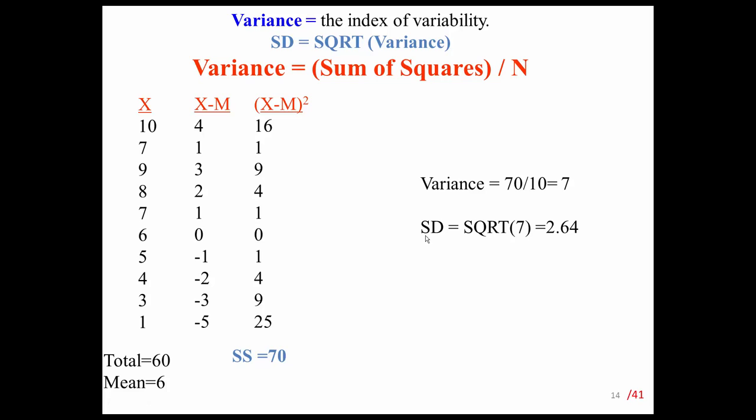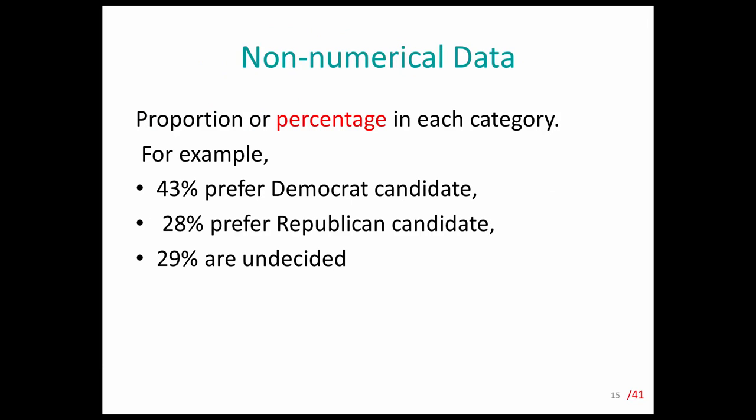For non-numerical data, we obviously cannot calculate the mean, median, or variance. The only thing we can do is use percentages. For example, you may describe your population in terms of what percentage prefer the Democratic candidate and what percentage prefer the Republican candidate.